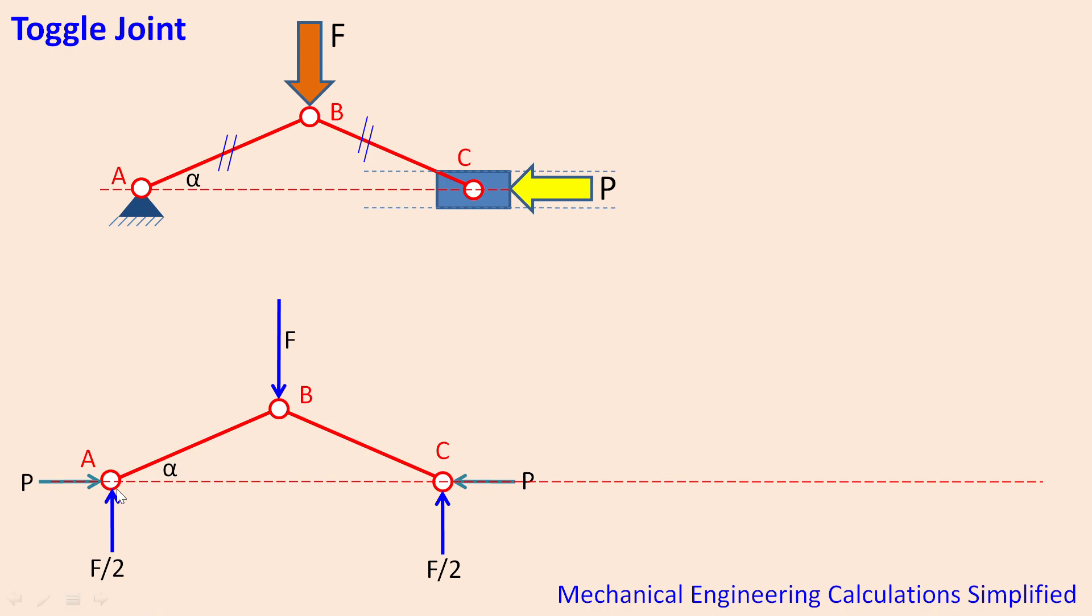But just observe carefully, the link AB can't have, consider the portion between the joints A and joint B, this particular length would have a force in line to the link length. So that is another force, so that particular force is creating a compression in the link AB and same in link BC. So that reaction force I am calling as R, so it is at an angle of alpha.